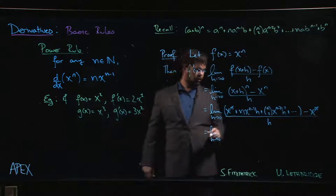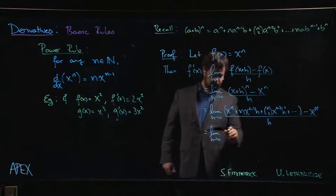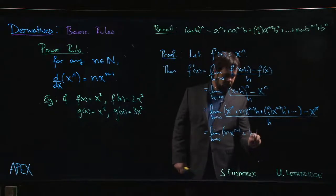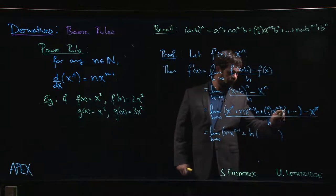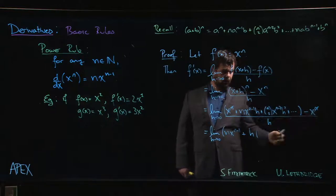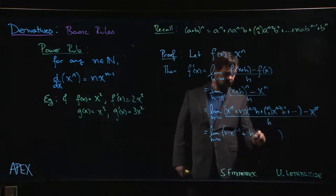Limit as h goes to 0. So here the h's are going to cancel, n x to the n minus 1. And all these other terms, there's at least an h squared. If there's more, there's going to be h cubed, maybe h to the 4. But when I divide by h, there's at least one h left over. So there's some stuff here that's multiplied by h. But h is going to 0.